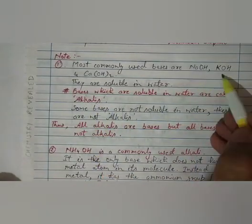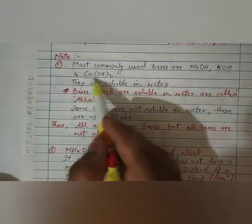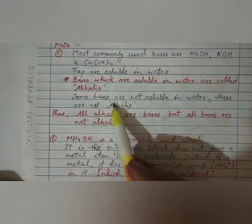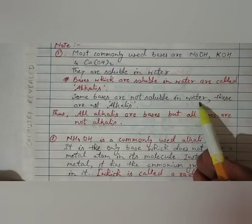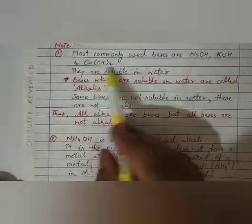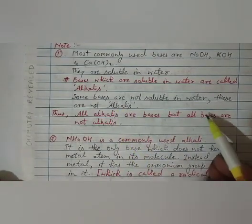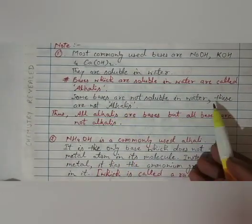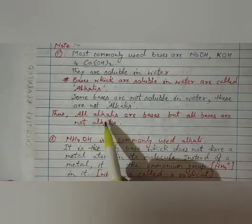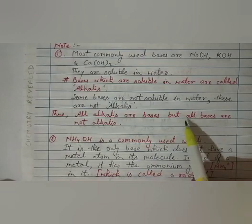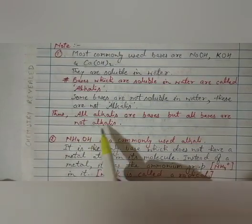Means sodium hydroxide, potassium hydroxide, and calcium hydroxide are alkalis. Whereas some bases are not soluble in water, these are not alkalis. Means if any base except all these three, any base is called not alkali because that is not soluble in water. So very important line to learn: all alkalis are bases, but all bases are not alkalis.